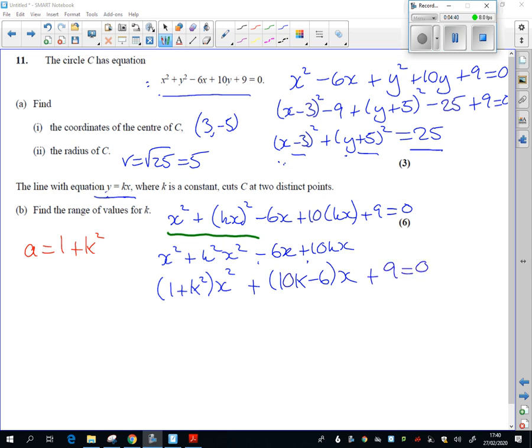By writing it like that, that's what they mean by three-term quadratic. I can just really clearly see the coefficient of x squared is 1 plus k squared, coefficient of b is 10k minus 6, and c is 9.